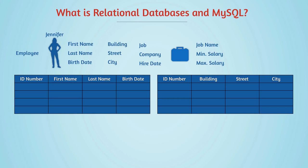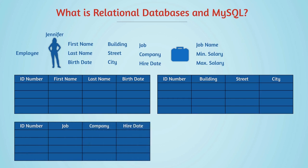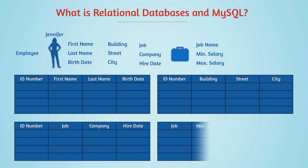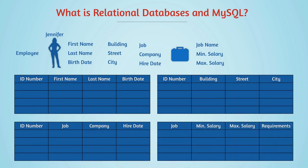This ID can be a social security number or a randomly generated number. We can have another table for jobs — the job title, company, and hire date — and another table for information about the job itself, containing the minimum salary, maximum salary, requirements, and many others.